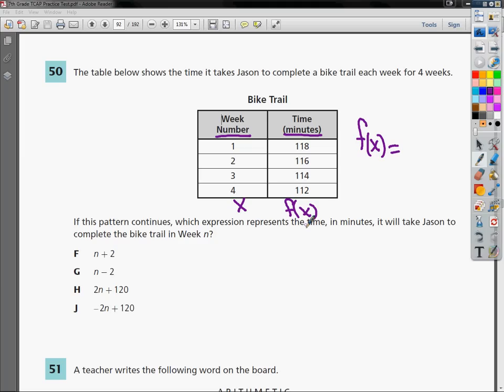Also, you could just use logic. To go from 1 to 118, I cannot just add 2 or take away 2. So f and g make absolutely no sense. So if I plug in 1 to n plus 2, I get 3. But I'm supposed to get 118, so that can't be it.